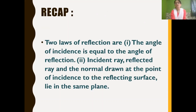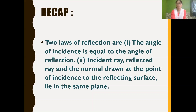So children, we have learned about two laws of reflection. The first law of reflection states that the angle of incidence is equal to the angle of reflection. The second law states that the incident ray, reflected ray, and the normal drawn at the point of incidence to the reflecting surface all lie in the same plane. We will end the session now and continue about light in detail in the next session. Thank you.